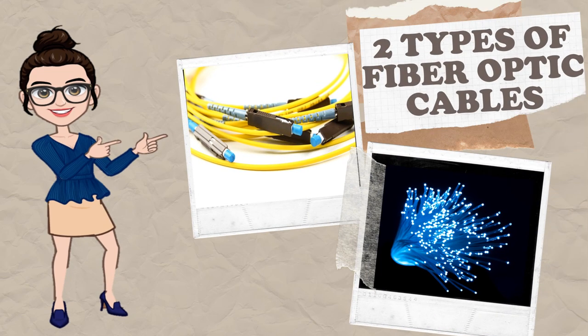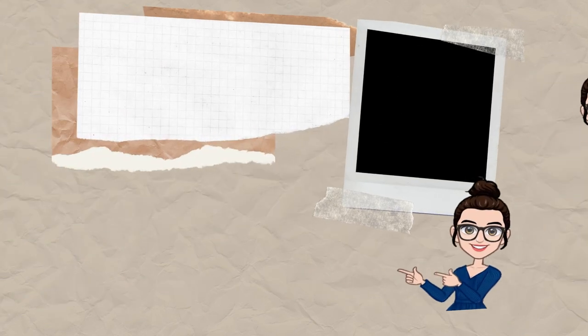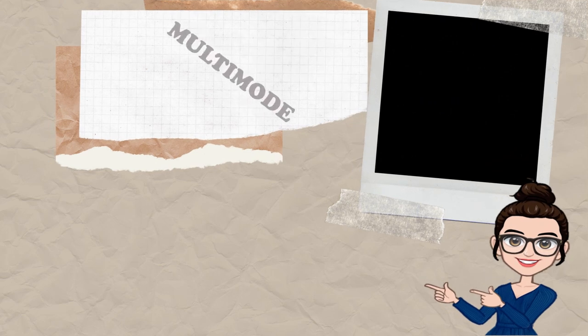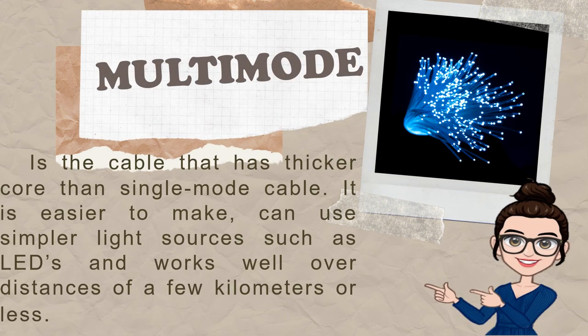Two types of fiber optic cables. Multimode is a cable that has a thicker core than single-mode cable. It is easier to make, can use simpler light sources such as LEDs, and works well over distances of a few kilometers or less.